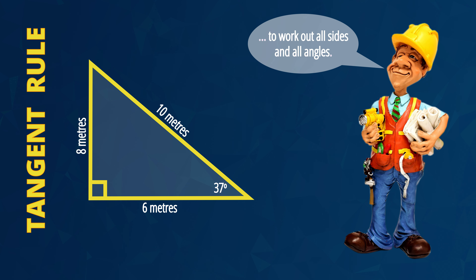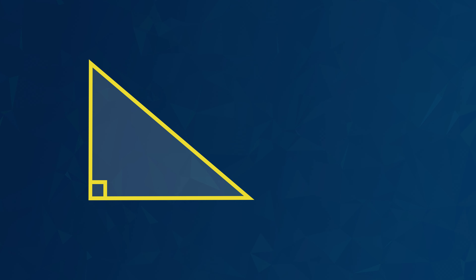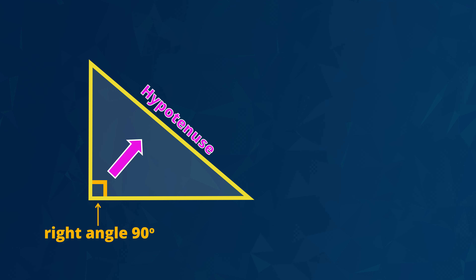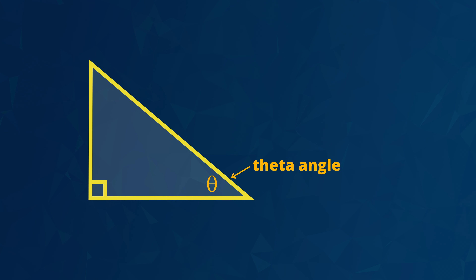So why is the tangent rule useful? The tangent of an angle is a mathematical operation that is the ratio of two sides of a right angle triangle. That means that in any right angle triangle you only need to know two measurements, like the lengths of two sides or one angle and one side. Then if you use the rule you can work out all of the sides and all of the angles in the triangle. That's a lot faster than guessing measurements by trial and error.